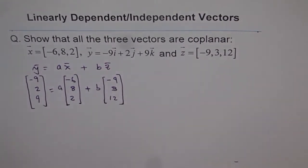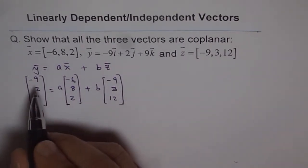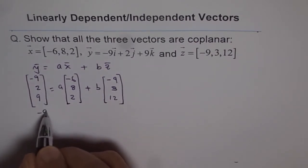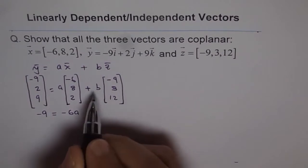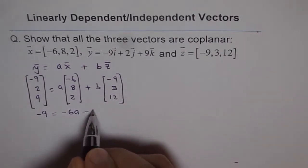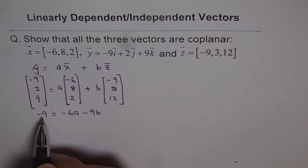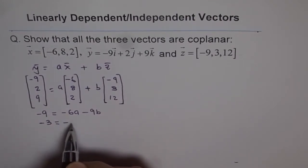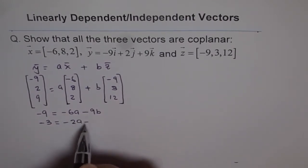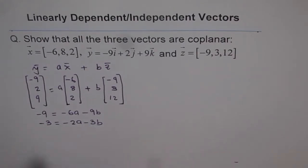We can form three different equations. And our equations are minus 9 equals to minus 6a minus 9b. Now this we can simplify. You can divide by 3, and if you do that, then you get 3 times 3 is 9. So minus 3 is equals to minus 2a minus 3b. Let's write this equation as equation 1.